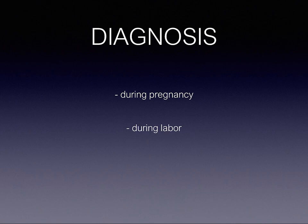By auscultation, the fetal heart sounds are best heard on one side of the umbilicus towards the fetal head. Ultrasound or X-ray confirms the diagnosis and may identify the cause, such as multiple pregnancy or placenta previa.